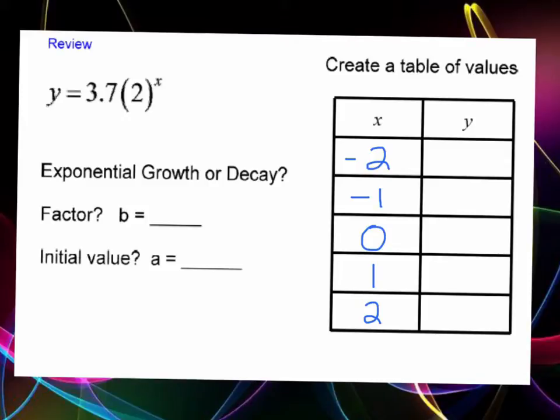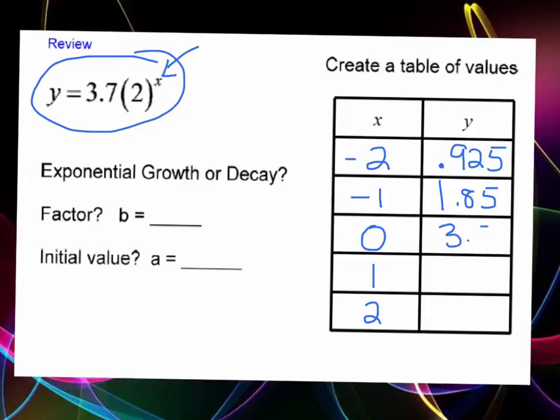Let's review what we've learned about exponential functions. If we're given a function in exponential form, we know it's exponential because we have the X as an exponent. We can take values for X like negative two, negative one, zero, one, and two, plug these numbers in for X and generate Y values. Using my calculator, for negative two I got 0.925, for negative one 1.85, for zero 3.7, for one 7.4, and for two 14.8.